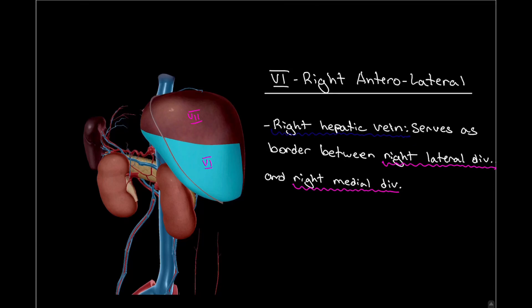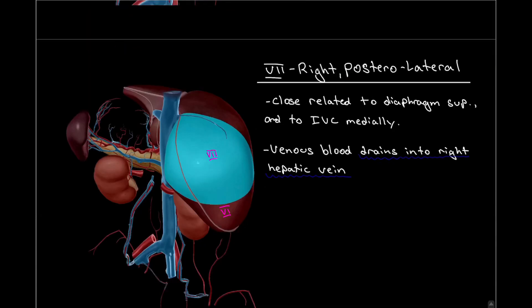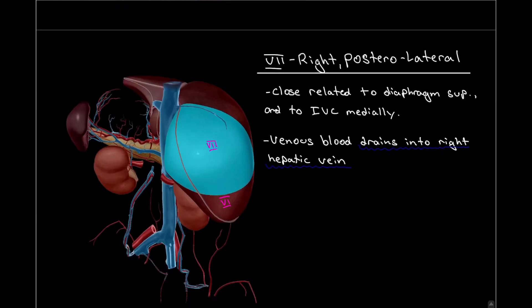Now we can see a more lateral view of the liver exposing segments number six and seven, which are part of the right lateral division. Both of these segments drain their blood into the right hepatic vein. The right hepatic vein is the border between the right lateral division and the right medial division.